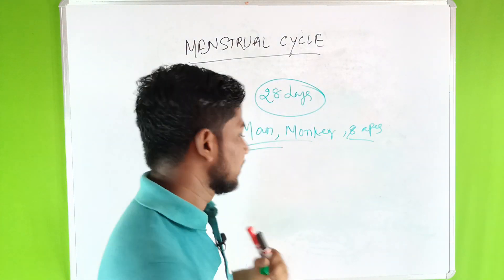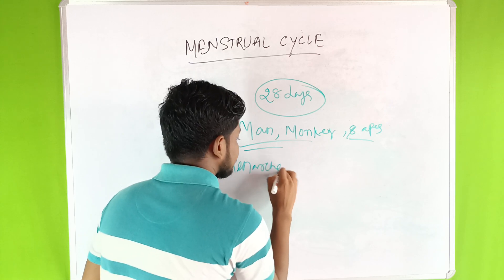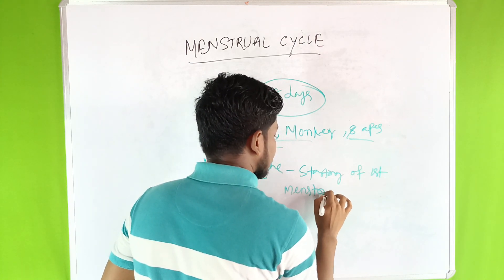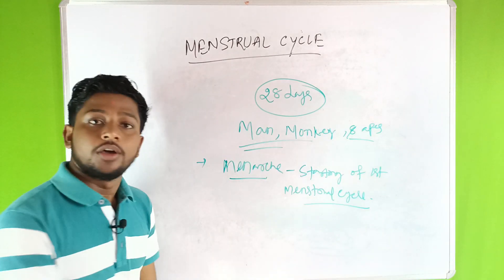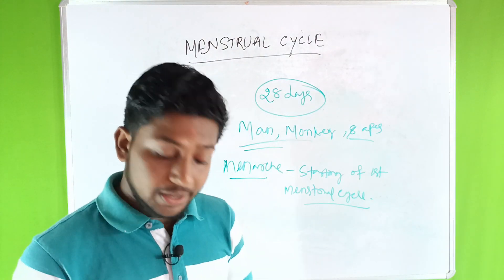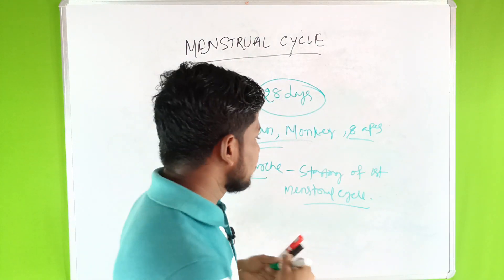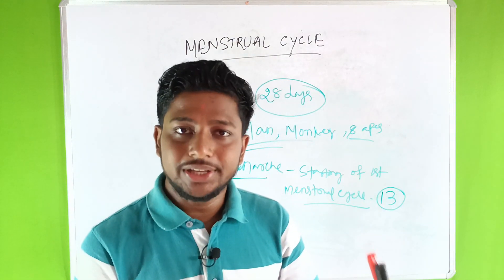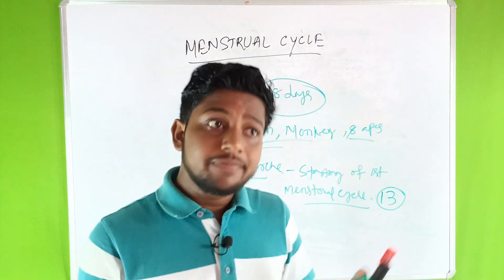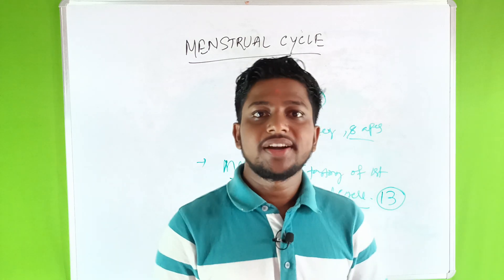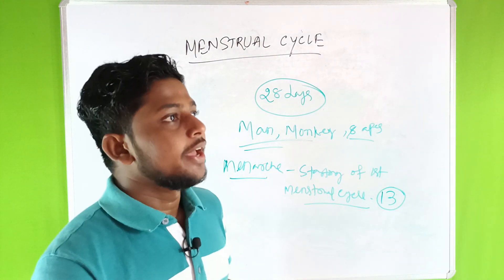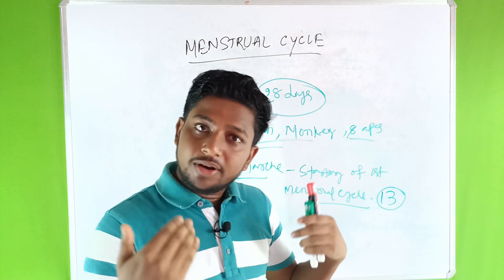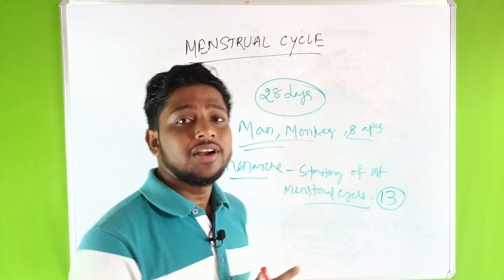Menarche means the starting of the first menstrual cycle in a female or girl at the age of 13 years, after the attainment of puberty. In case of girls or females, puberty includes broadening of shoulders, high-pitched sound, hair in axillary and pubic regions, development of mammary glands, and development of reproductive organs.